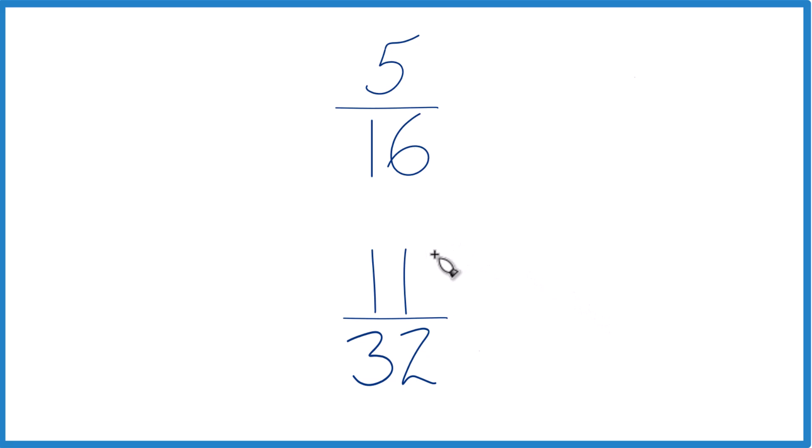And when you compare the decimals, you'll see that the larger decimal will be the one for 11 thirty-seconds. So 11 thirty-seconds is greater than 5 sixteenths.